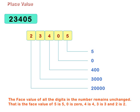The face value of all the digits in the number remains unchanged. That is, the face value of 5 is 5, 0 is 0, 4 is 4, 3 is 3, and 2 is 2.